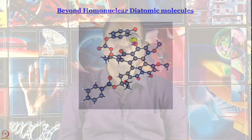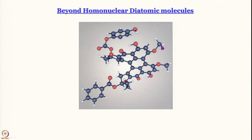Of course we will not be able to go all the way to calculate quantum chemical calculations for a molecule like this, but let us see first how we handle diatomic molecules that are not homonuclear — heteronuclear diatomic molecules — and then how we handle polyatomic molecules using molecular orbital theory.